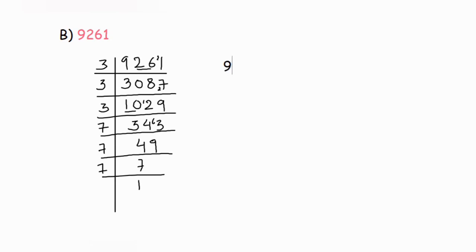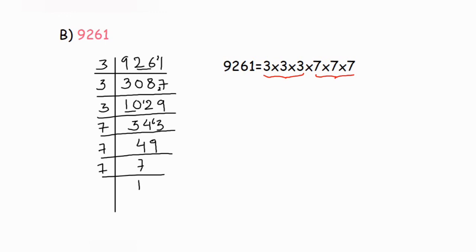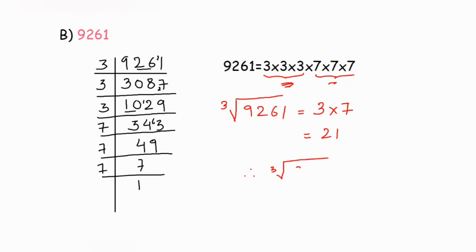So 9261 can be written as 3 × 3 × 3 × 7 × 7 × 7. Now we form triples: one group of three threes, and one group of three sevens. From each group we take one number — one 3 and one 7. So the cube root of 9261 = 3 × 7 = 21.